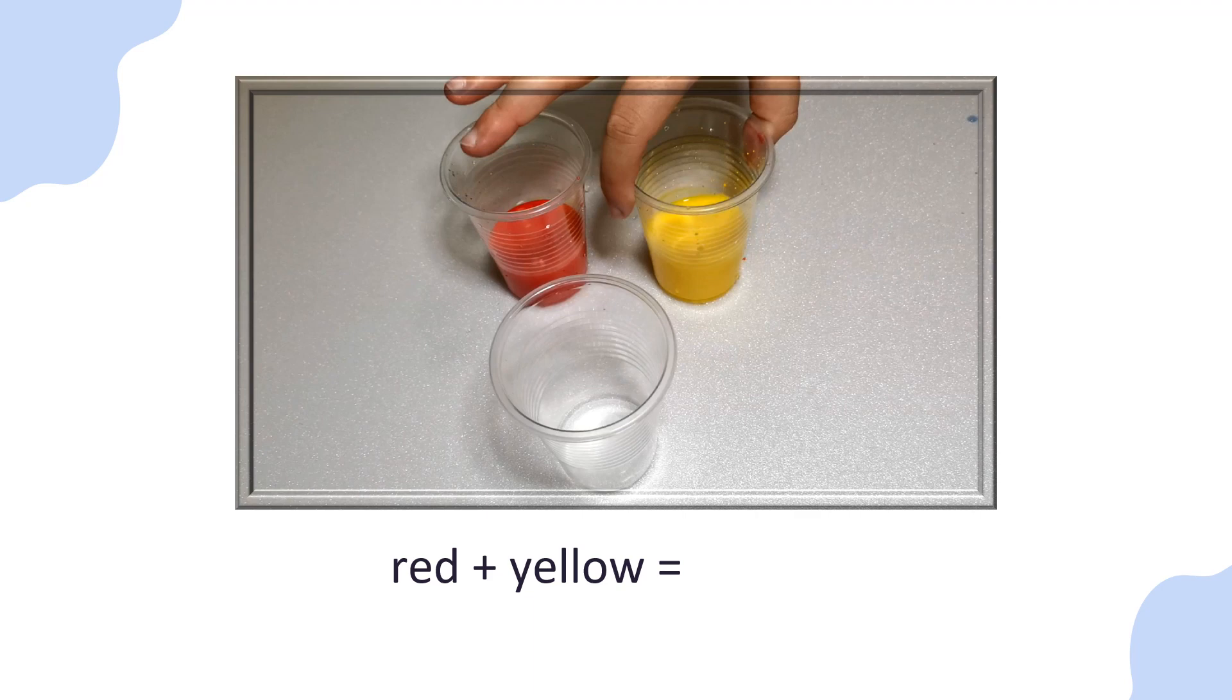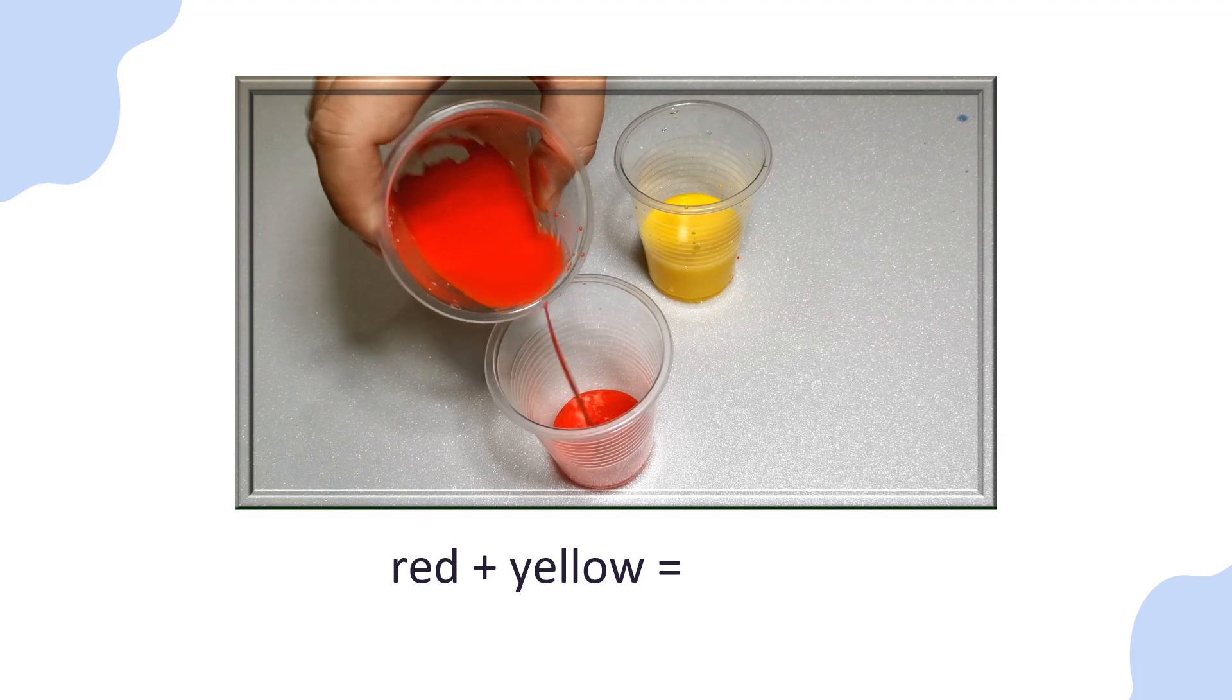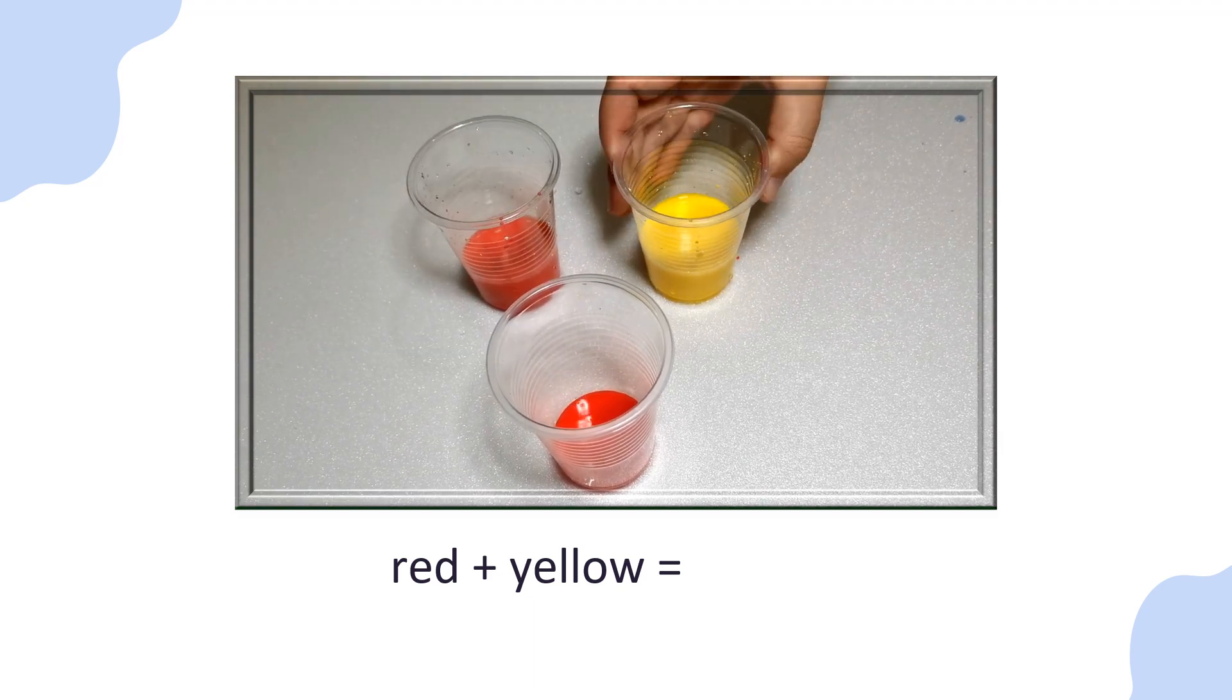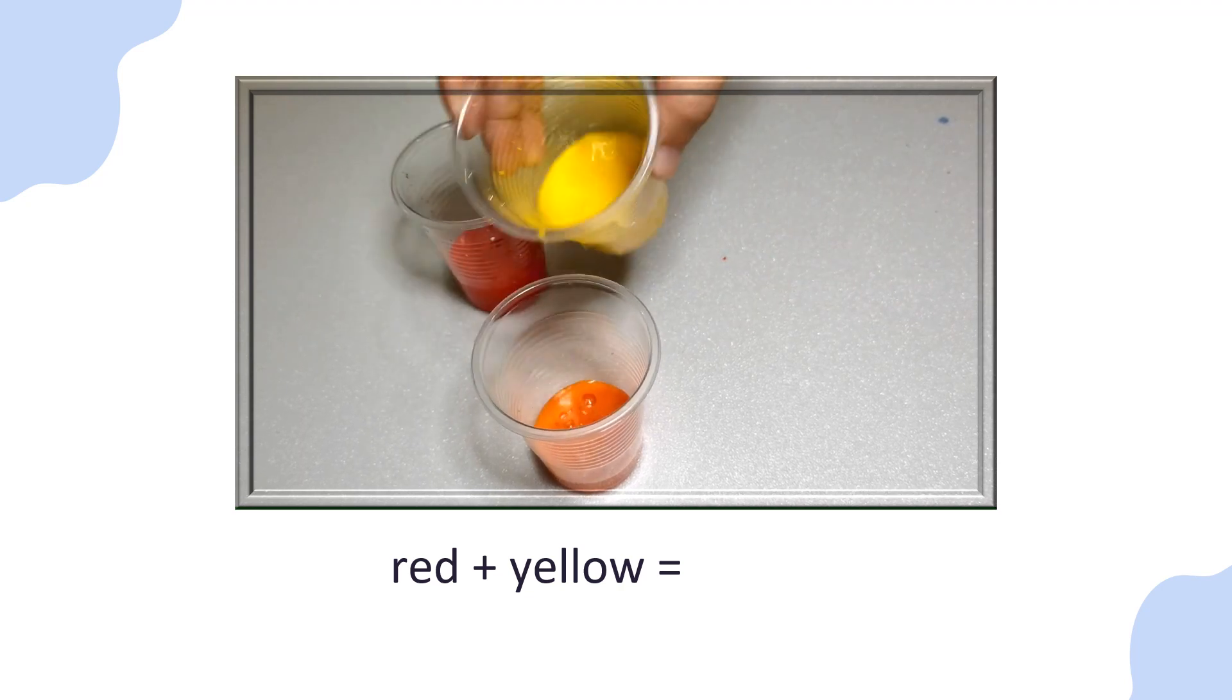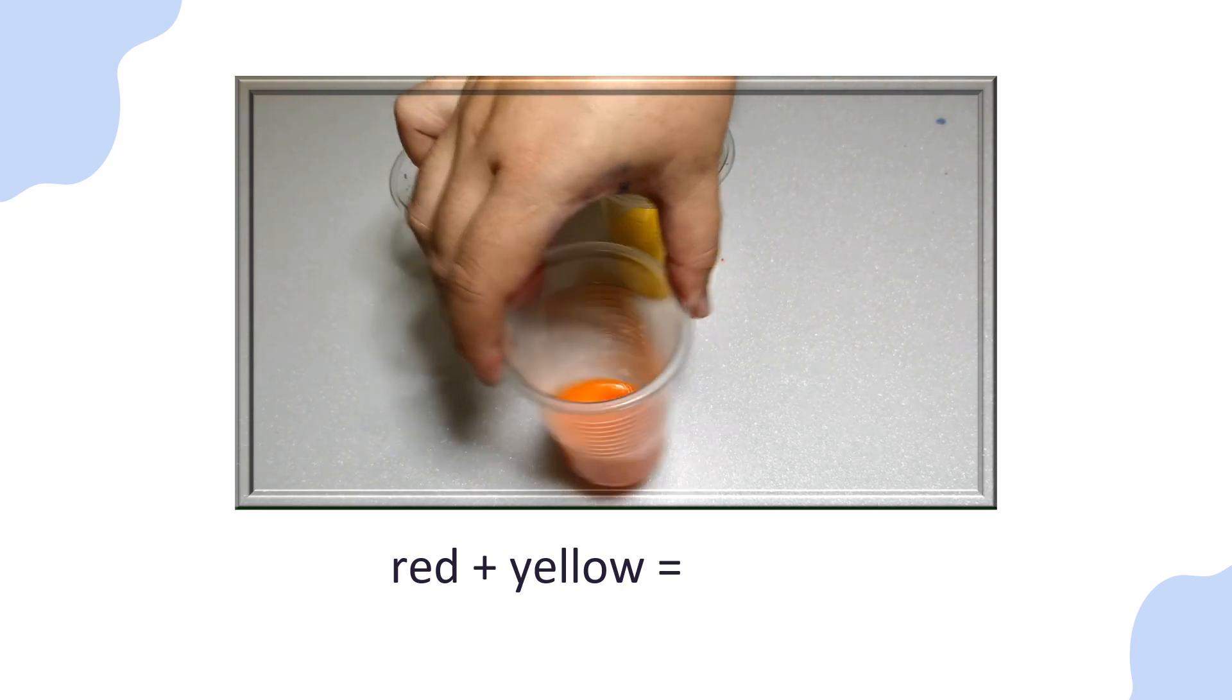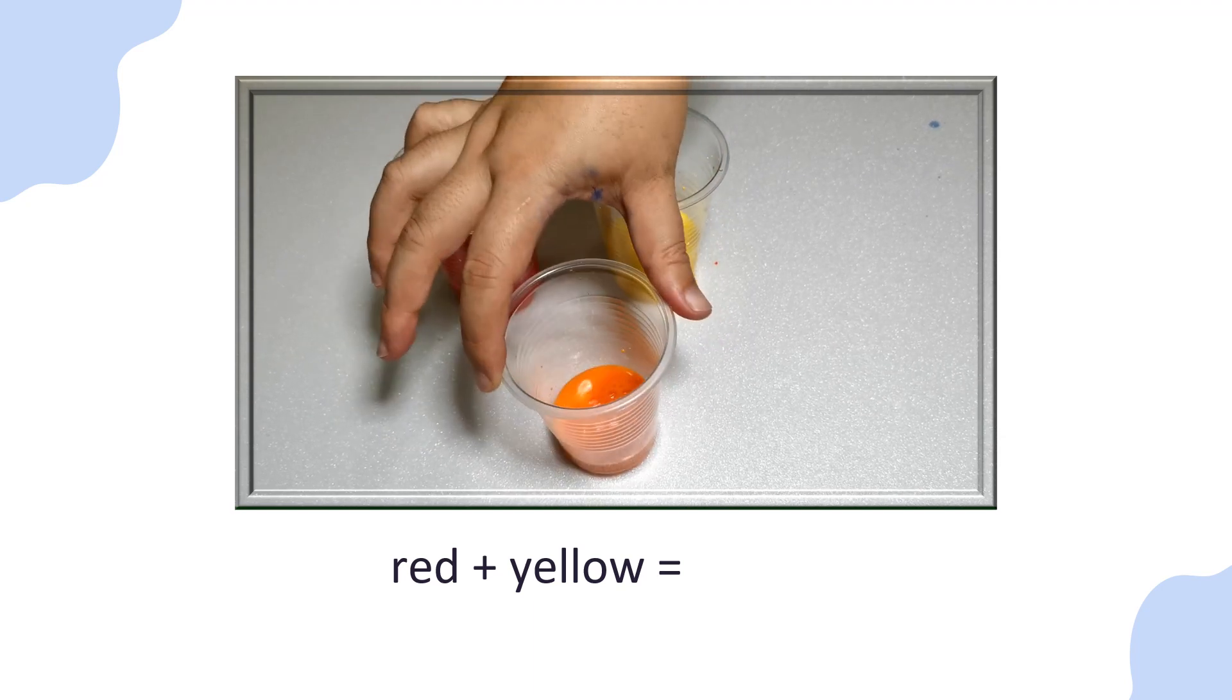What about this? What will happen if you mix red with yellow? Let's find out. Red and yellow. Can you guess the color? What color is it? Yes, it's orange. Red mixed with yellow is orange.